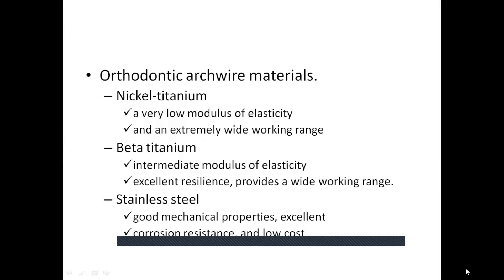The most commonly used orthodontic arch wire material is nickel titanium (NiTi), offering a very low modulus of elasticity and an extremely wide working range. Beta titanium wires, known as TMA (titanium molybdenum alloy), have an intermediate modulus of elasticity, excellent resilience, and a wide working range. One drawback of beta titanium is its high coefficient of friction, though it has high formability allowing bends, stops, loops, and spot welding.